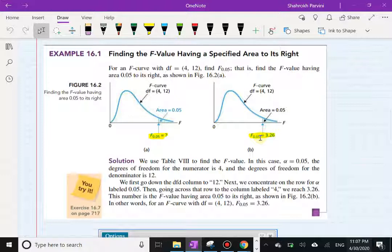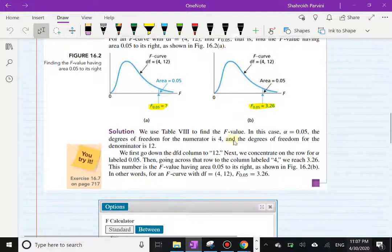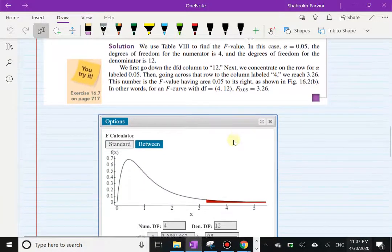So remember, that's what we want to do in our example. This is an F with 4 and 12 degrees of freedom. Now let me show you the output from StatCrunch, and there you go.